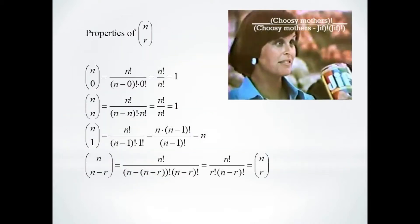Here's a few properties for n choose r. n choose 0 will evaluate to n factorial over n factorial, which is 1. Similarly for n choose n. n choose 1 cancels everything in the numerator except n. So n choose 1 is equal to n.